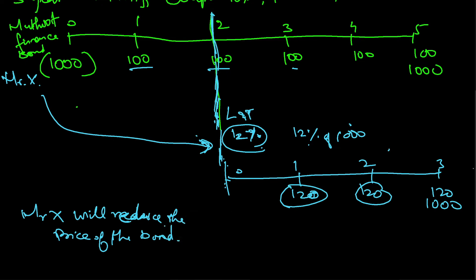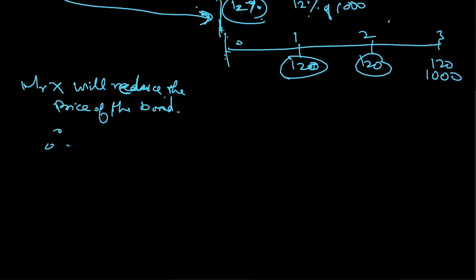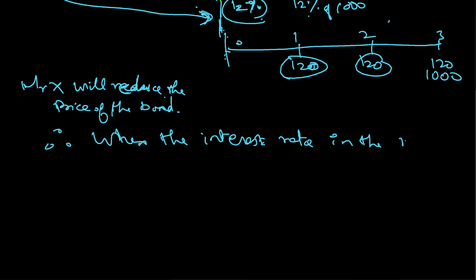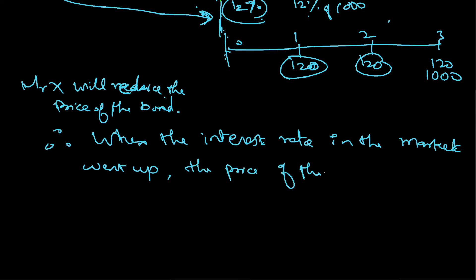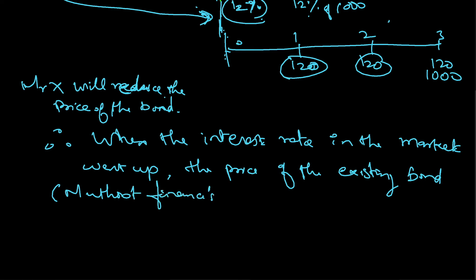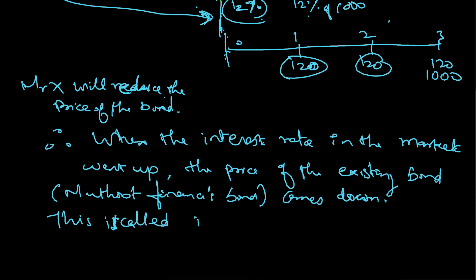Mr. X will reduce the price of the bond. So therefore, when the interest rate in the market went up, the price of the existing bond — in this case Motud Finance's bond — comes down. This is called the inverse relationship.